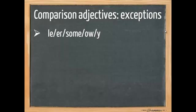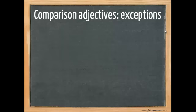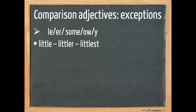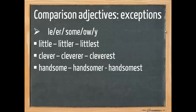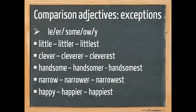First, the words that we call leersomewy. These are adjectives that end in the letters above and that contain two or more syllables with the stress on the second syllable. With these words, we also add -er or -est. Little, littler, littlest. Clever, cleverer, cleverest. Handsome, handsomer, handsomest. Narrow, narrower, narrowest. And happy, happier, happiest. And please note that the Y has become an I.